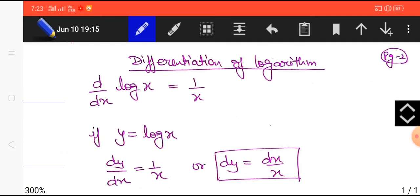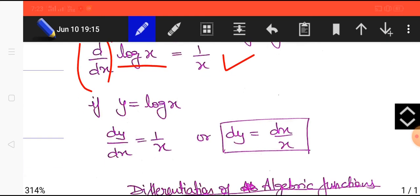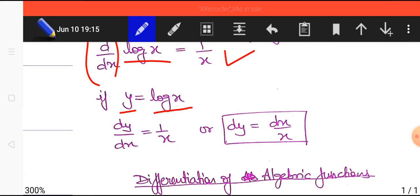The differentiation of log x: we have a formula that d by dx of log x equals 1 by x. So if we have log x, its derivative is 1 by x, or we can write dy equals dx by x. This is log differentiation, which you will find in physics chapters about errors and propagation of errors.